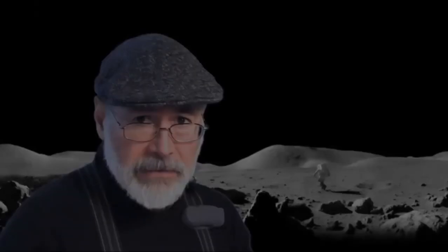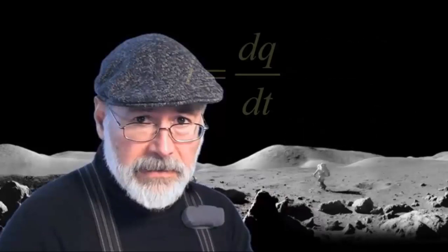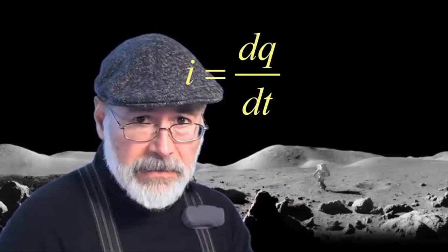Symbol, P. The relationship between energy and power is the same as that between charge and current. Current is the flow of charge. Power is the flow of energy.